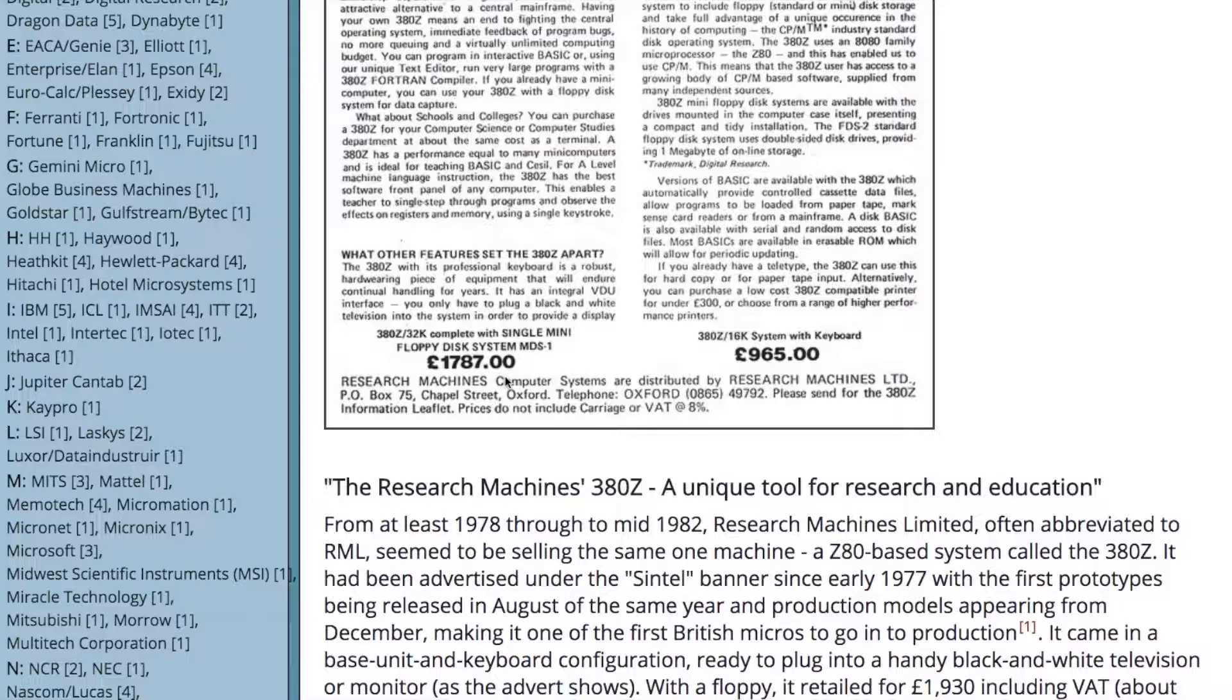It had a green screen and it had this box with these two big handles on the front and a key on it. It was actually a computer that you started up with a key which is quite amazing. And if you look at the thing, the price here for a 32K system, it's £1,787 with a single floppy disk. And for the 16K system with keyboard, that was £965.